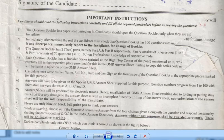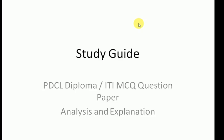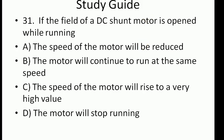Question 31: If the field of a DC shunt motor is opened while running, what should happen? The options are: A) The speed of the motor will be reduced, B) The motor will continue to run at the same speed, C) The speed of the motor will rise to a very high value, D) The motor will stop running.